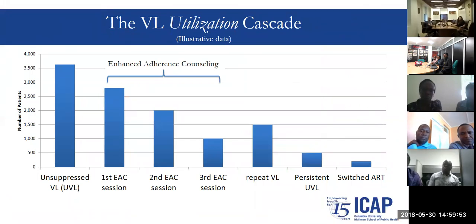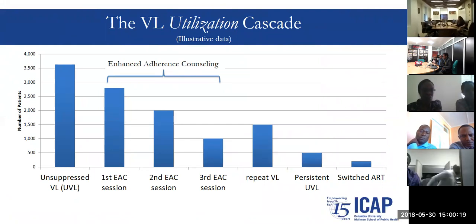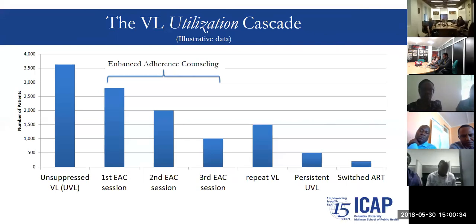Using illustrative data, this zooms in on what we're calling the viral load utilization cascade. Sadly, we know that at every step along this cascade there are leaks — we're losing people. For people with an unsuppressed viral load — defined as more than 1,000 copies per mL — in theory, most countries recommend three enhanced or intensified adherence counseling sessions, a repeat viral load, and if persistent unsuppressed viral load, a switch of ART regimen. We know that sadly that doesn't happen, and at each point we're losing opportunities.